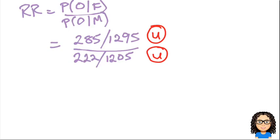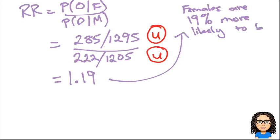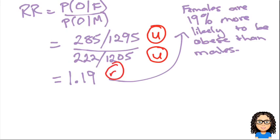Dividing those two probabilities gives a value of 1.19. Since females are on top, this tells us that females are 19% more likely to be obese than males. Getting through to this value of 1.19 earns a Merit.